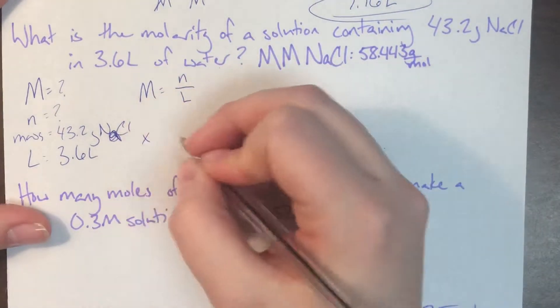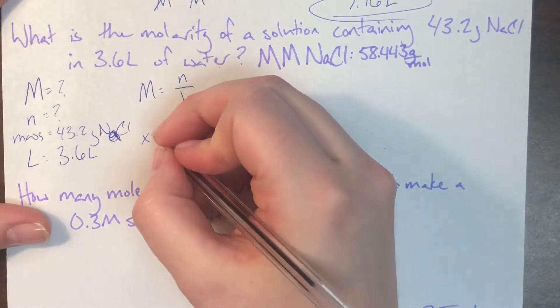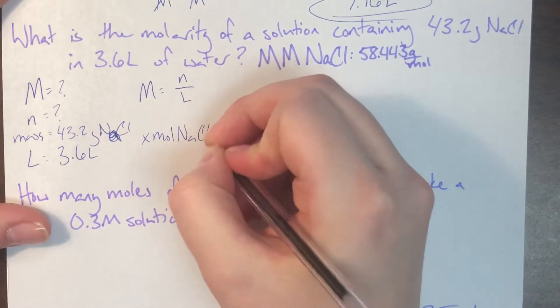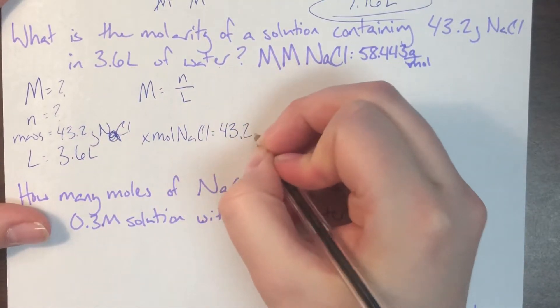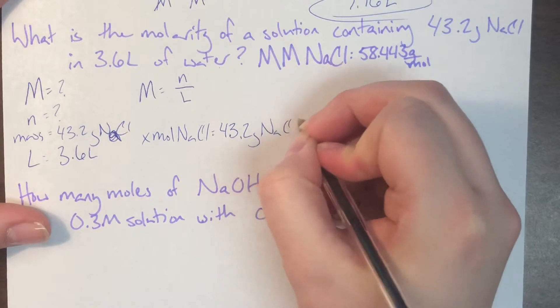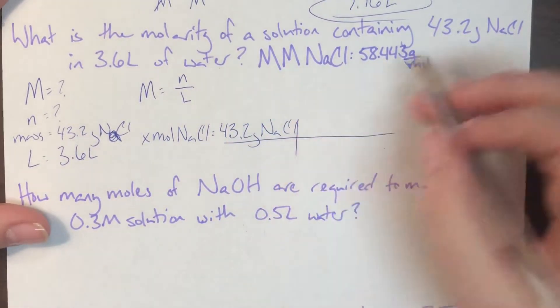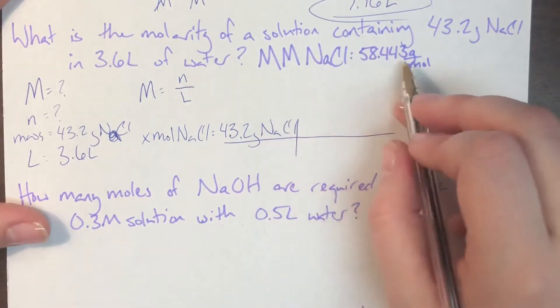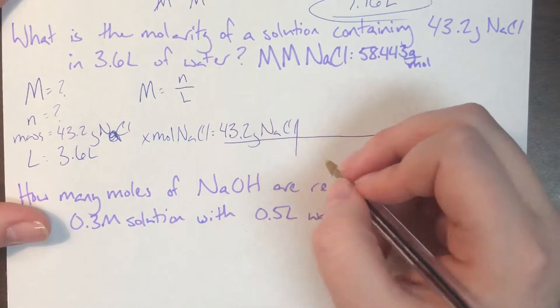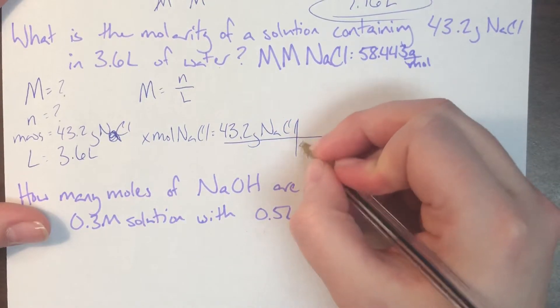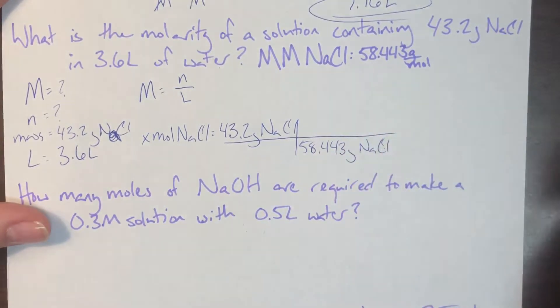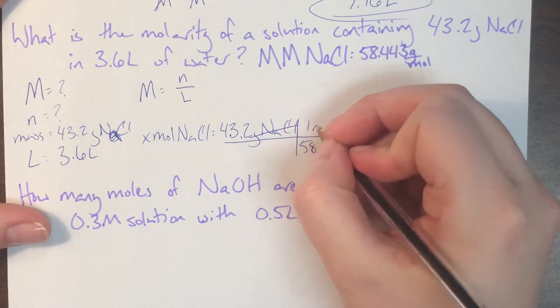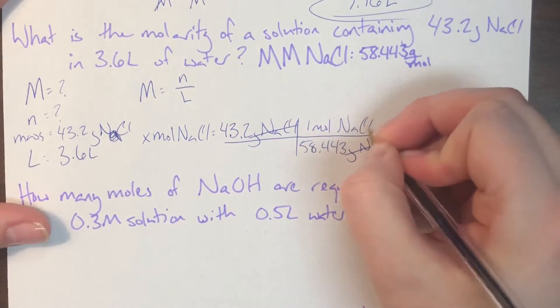So we're going to go ahead and set up a quick stoichiometry equation. We're going to say X moles of sodium chloride is equal to the mass of sodium chloride that we were provided, so 43.2 grams of sodium chloride. I already calculated the molar mass of sodium chloride off to the side, and it is 58.443 grams per mole. So since I need to cancel grams of sodium chloride, I'll put the 58.443 grams of sodium chloride on the bottom, and the 1 mole of sodium chloride on the top.